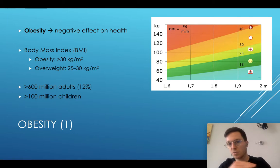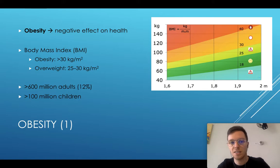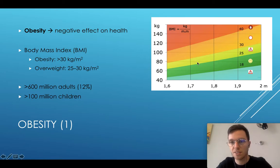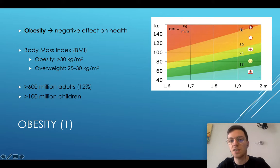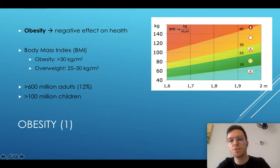Obesity is an increasing problem which has a negative effect on health. It's measured by the body mass index, the BMI, and I put a figure of that right here. A person is overweight when their BMI is from 25 to 30, has obesity from 30 to 40, and even morbid obesity above 40. BMI is kilograms of a person divided by the length times the length — that's the formula.